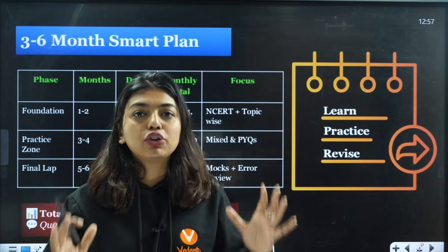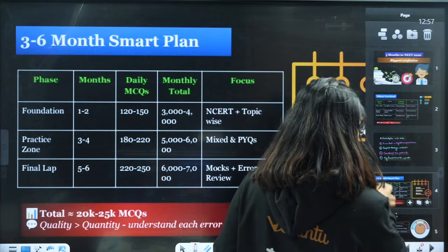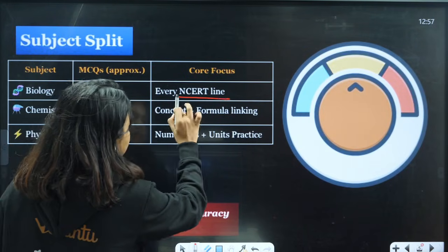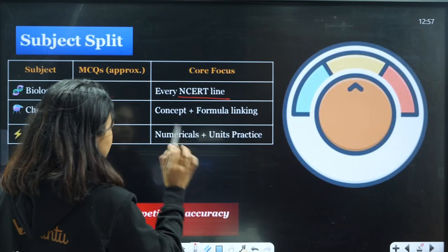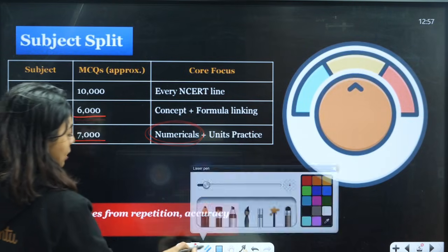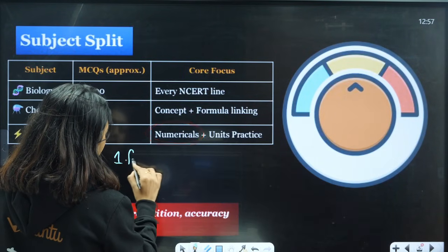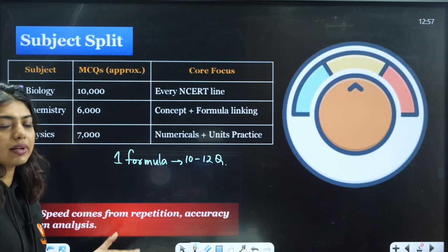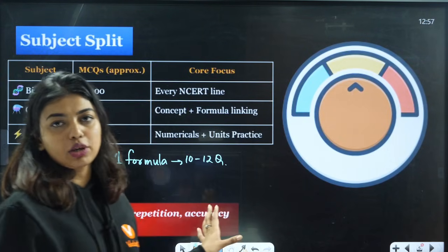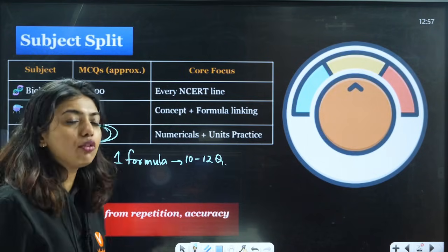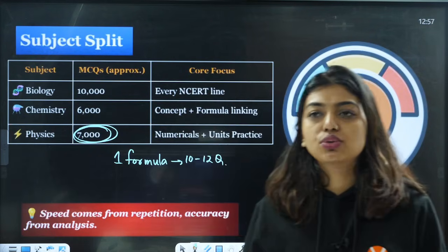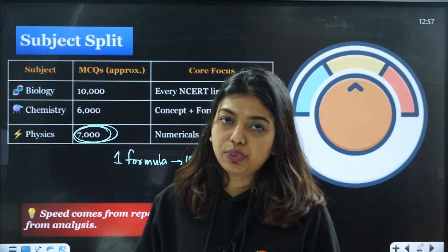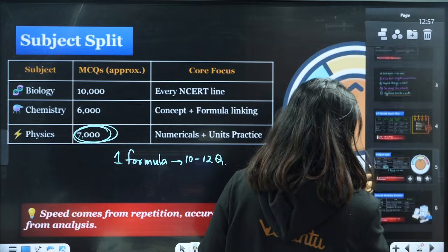Now students, please understand: for a normal topper also, they do subject-wise splitting. Subject-wise splitting means biology, let's say 10,000 questions—every NCERT line by line they used to do. Chemistry around 6,000, physics around 7,000. Here understand, physics—from one numerical, one formula only, he used to do around 10 to 12 questions. So you can imagine: this chapter, let's say five formulas are there, from five formulas he used to solve this many questions. So that way this number might look big now, but you might have already solved many of the questions. There are a lot of students who tell me they solved so many questions, so it is very normal. Don't get shocked looking at this number. What you have to do is invest your time and divide your months.